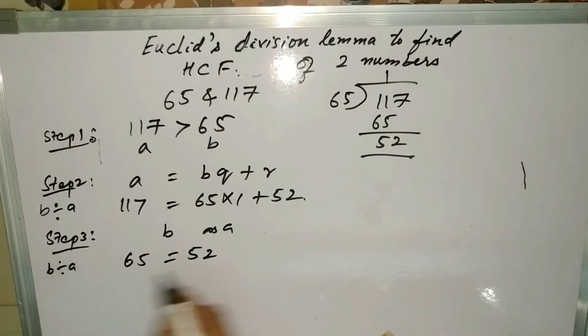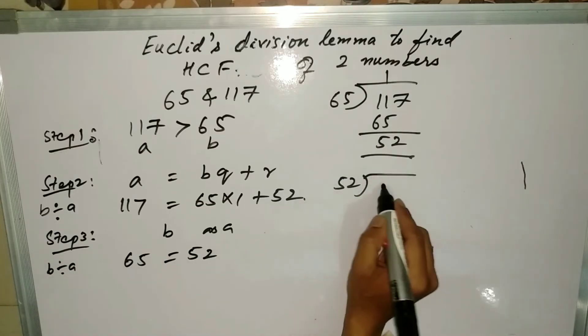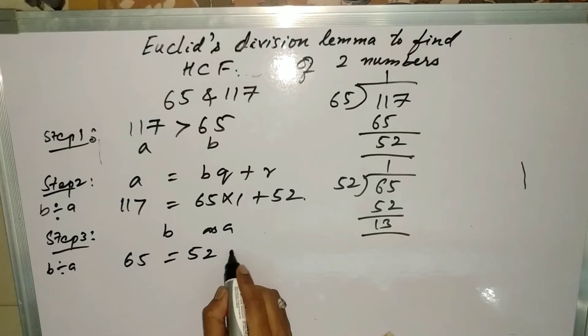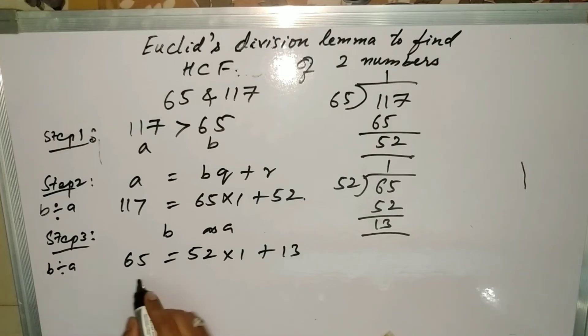If you divide 52 into 65: 52 ones are 52, so we get 13 as the remainder. So 52 times 1 plus 13 is the remainder.